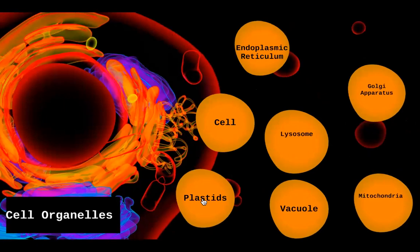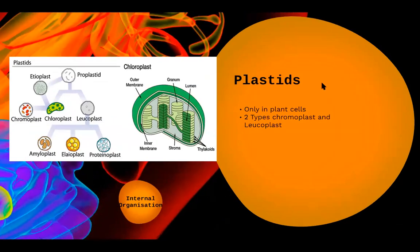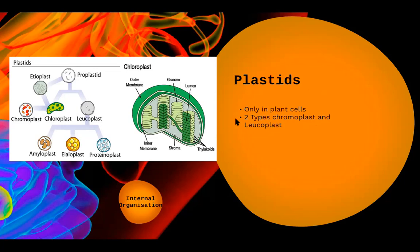We'll now move to the next organelle — plastids. Plastids are found only in plant cells, and there are two types: chromoplasts and leukoplasts. They come from another type of cell called a proplastid. From proplastid, etioplasts form, which further differentiate into chromoplasts. In general, chromoplasts are colored and leukoplasts are colorless.